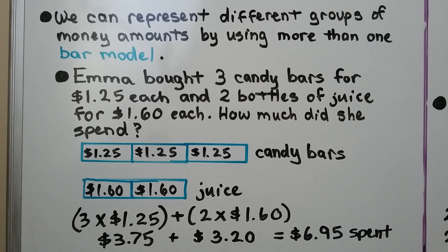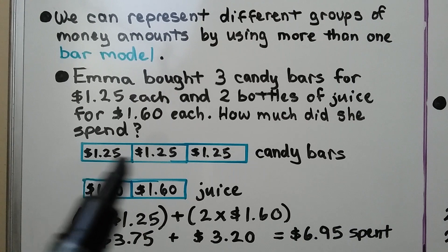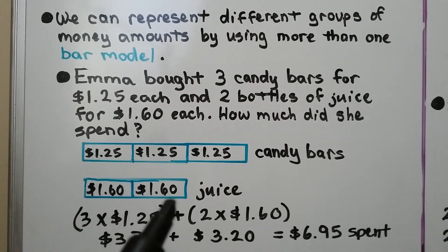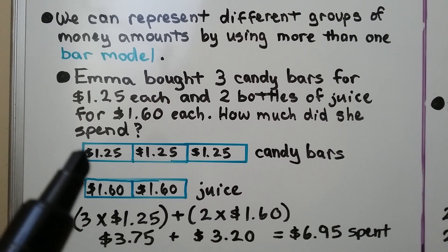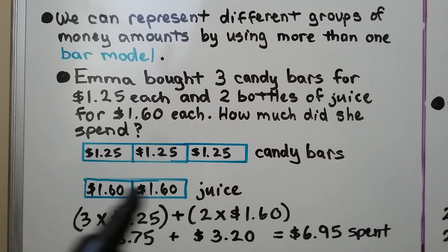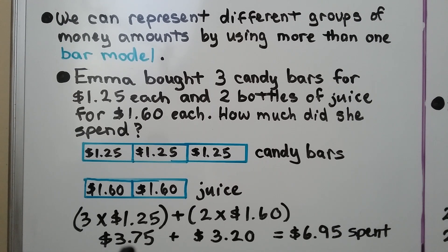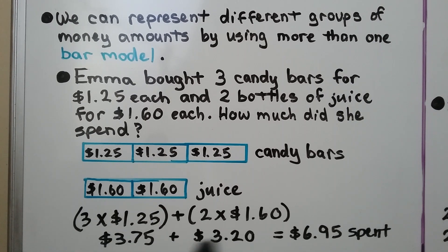We can represent different groups of money amounts by using more than one bar model. Emma bought 3 candy bars for $1.25 each and 2 bottles of juice for $1.60 each. How much did she spend? We represent the candy bars in 3 boxes each containing $1.25, and the 2 bottles of juice in 2 boxes each containing $1.60. Our equation is 3 times $1.25, which is $3.75, plus 2 times $1.60, which is $3.20. Adding them together, we know she spent $6.95.